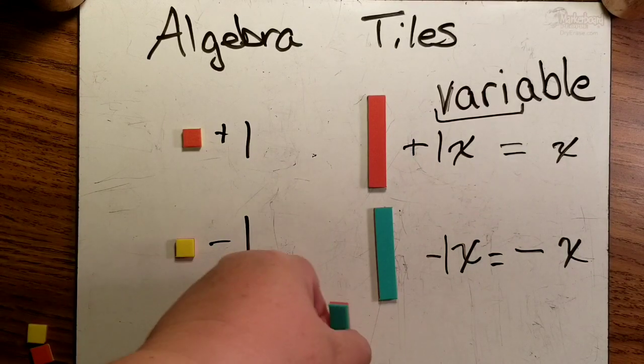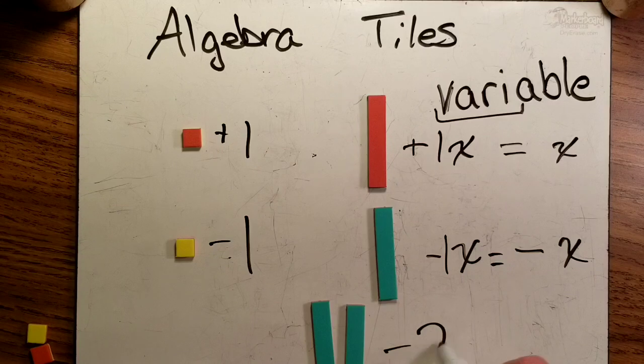If you have two, then we'd always write down that's negative two, because that's telling us how many that we have, that we have more than one.